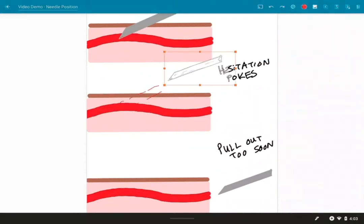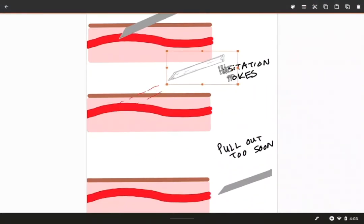Don't do hesitation pokes. Be confident when you're putting that needle in, get a half inch away, put it in there fast and hold it there. And if you're not getting blood, once the needle's there, you can pull it out a little bit or push it in a little bit, but that's it.